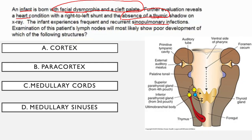This is DiGeorge syndrome, which results from the absence of the third and fourth pharyngeal pouches. The third pharyngeal pouch gives rise to the inferior parathyroid gland and the thymus. The fourth pouch gives the superior parathyroid gland. Because this baby lacks both the third and fourth pouches, he has no parathyroids — leading to hypocalcemia — and no thymus. Without a thymus, there is no place for T cell maturation, so this baby will mainly have a T cell defect. The B cells are unaffected because it's only the thymus that is gone.